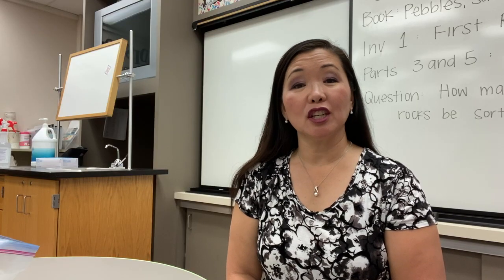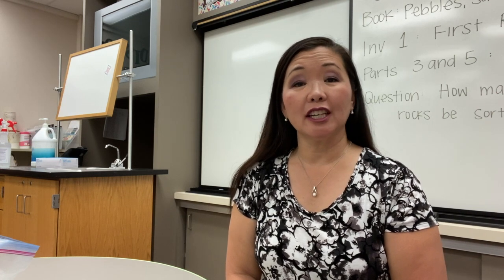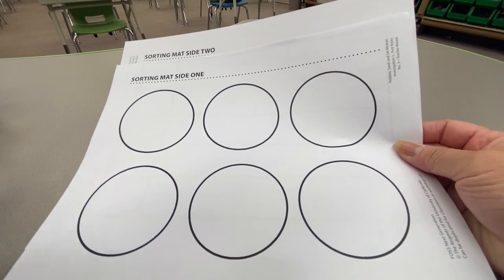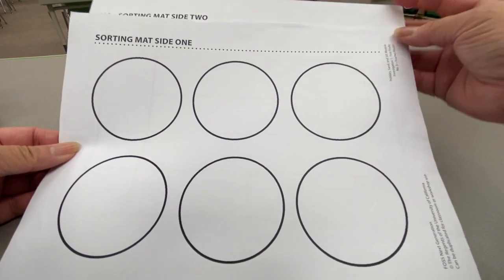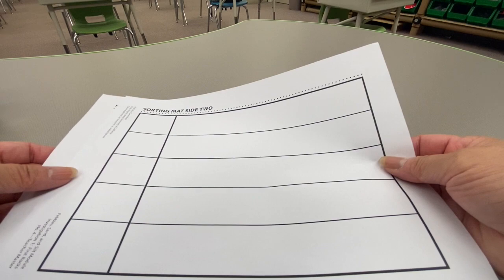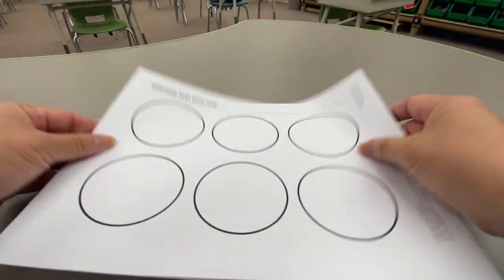Today we are going to continue to work as geologists by studying rocks, their properties, and looking for patterns. Properties are things that we observe about objects by seeing them or feeling them. Here is a list of 21 rock properties in which rocks can be sorted. For this investigation we will be using two types of sorting mats, one with circles and one with bars. I will place a link for both of these in the description of this video.